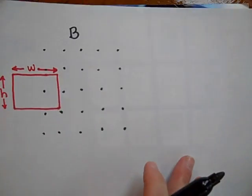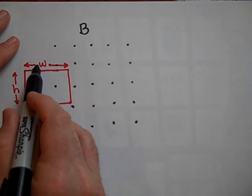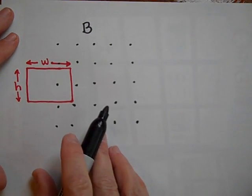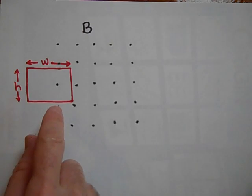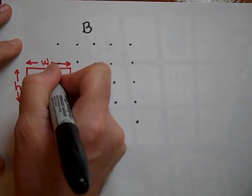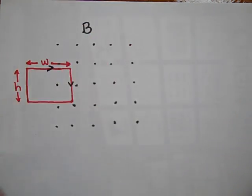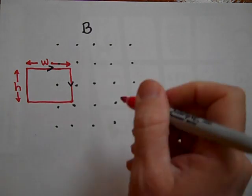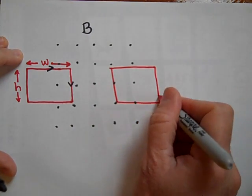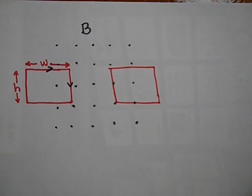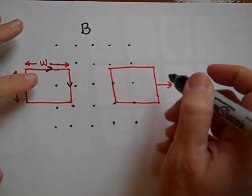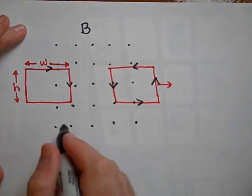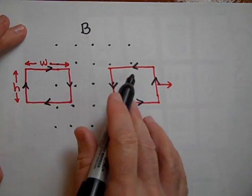Let's get this last one. This is a wire with width w and height h. As I pull it in, can you tell me which way the current will be induced? It's gaining dots, so it's going to try and make X's. The current will be induced clockwise — that's how it makes its own X's. When it's completely in the field, there's no induced current because the flux isn't changing.